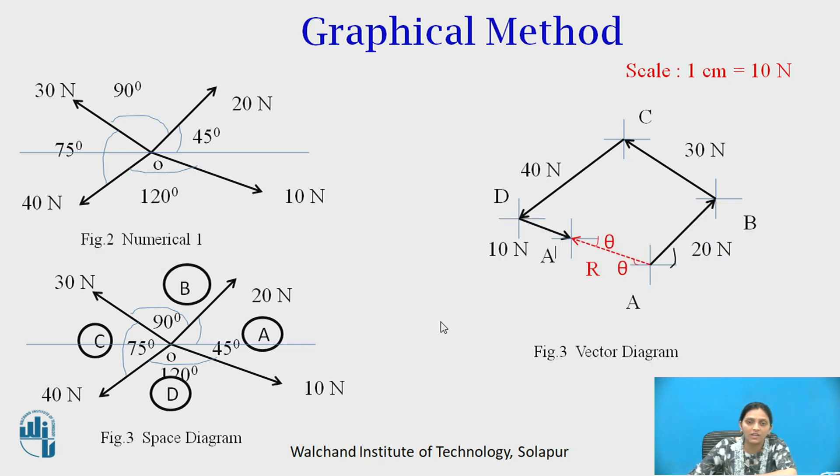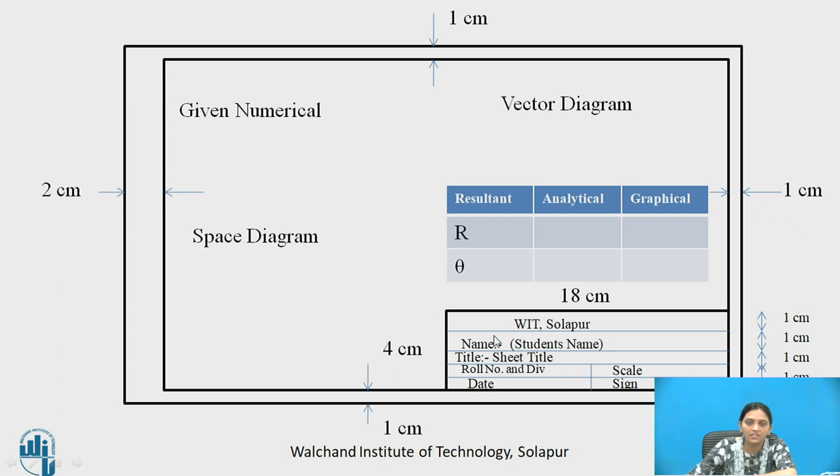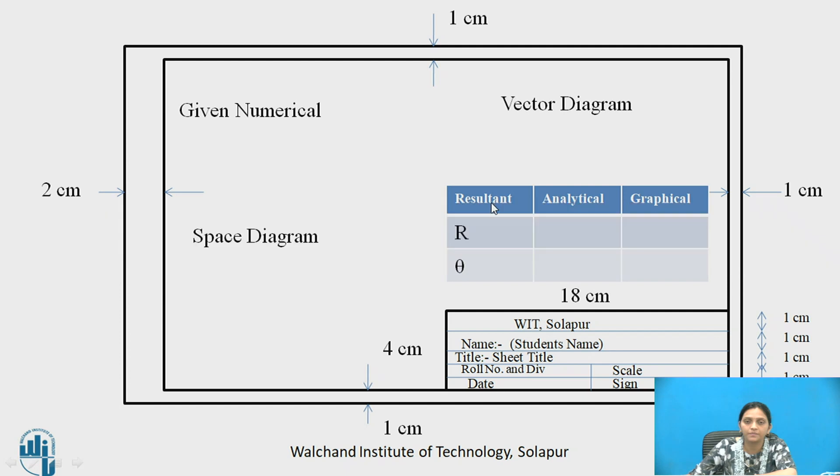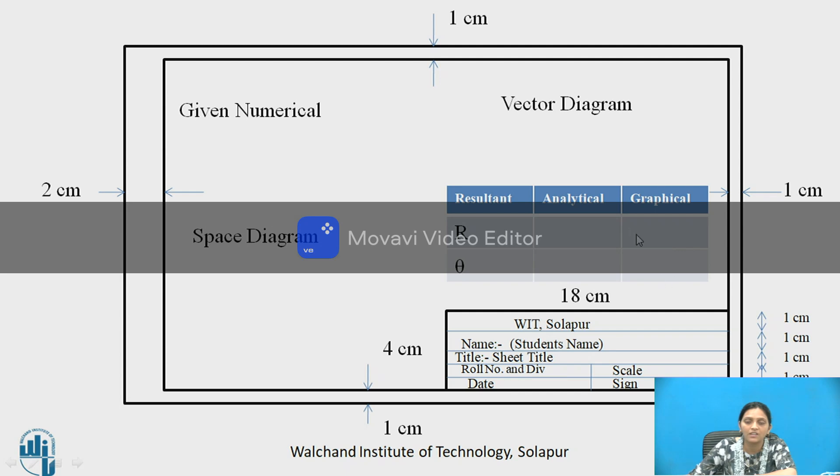Now, all these drawn diagrams you represent in a format like this. Here you draw given numerical, below the given numerical draw space diagram. At this corner draw vector diagram, below vector diagram show table like this. Resultant having magnitude R and inclination or direction theta. Its analytical answer you write in this column and graphical answer you write here. Just compare these two answers, they must be nearly the same.